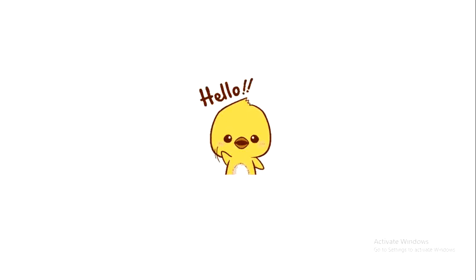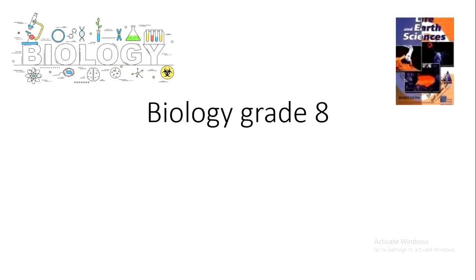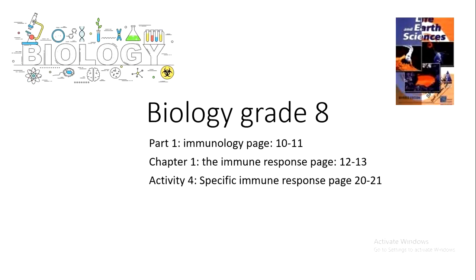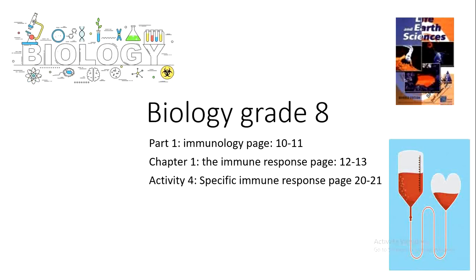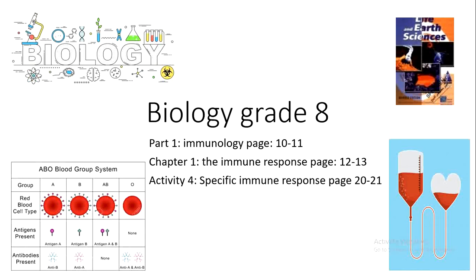Hello guys, we're back with new videos. Today's video is for grade 8 biology. We will talk about activity 4 of the first chapter, which is the specific immune response. Today I'll share the second part of this activity, which is the humoral specific immune response. We will talk about blood transfusion, how blood transfusion is accepted or rejected, and about the ABO blood group system.